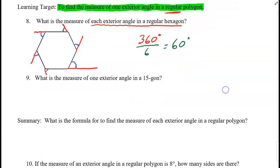So it turns out, I'm going to jump down to the summary. What's the formula for the measure of each exterior angle in a regular polygon? So each exterior angle in a regular polygon is 360 degrees divided by n. And remember, n is the number of sides.